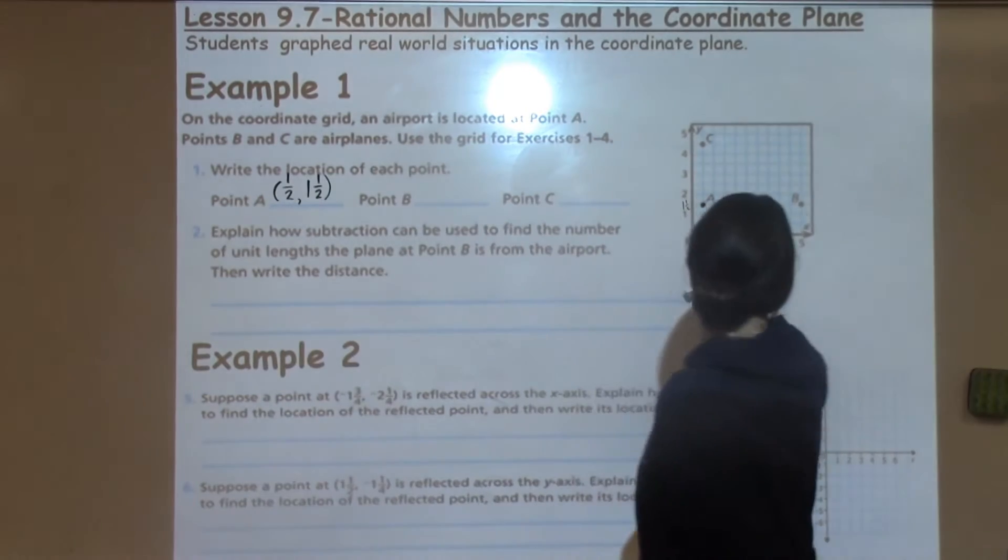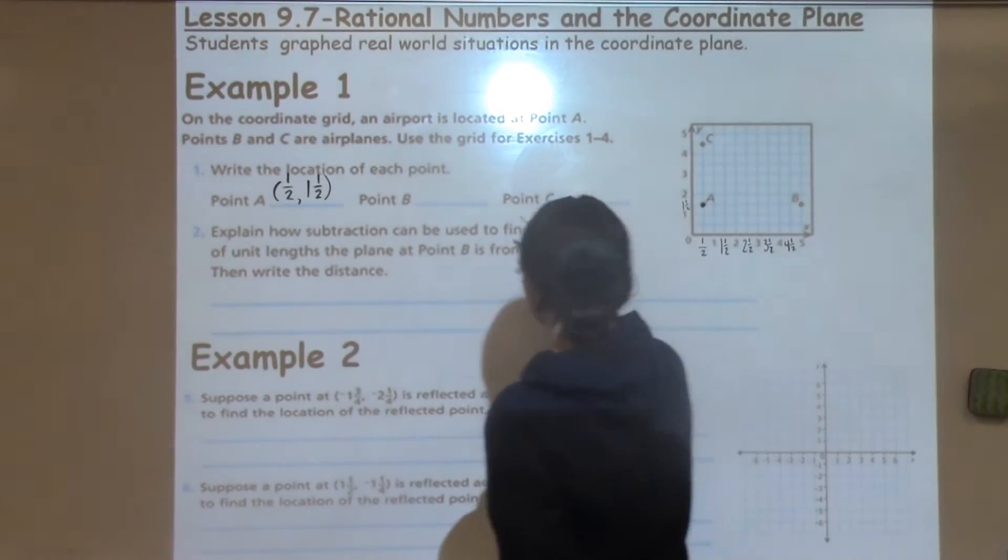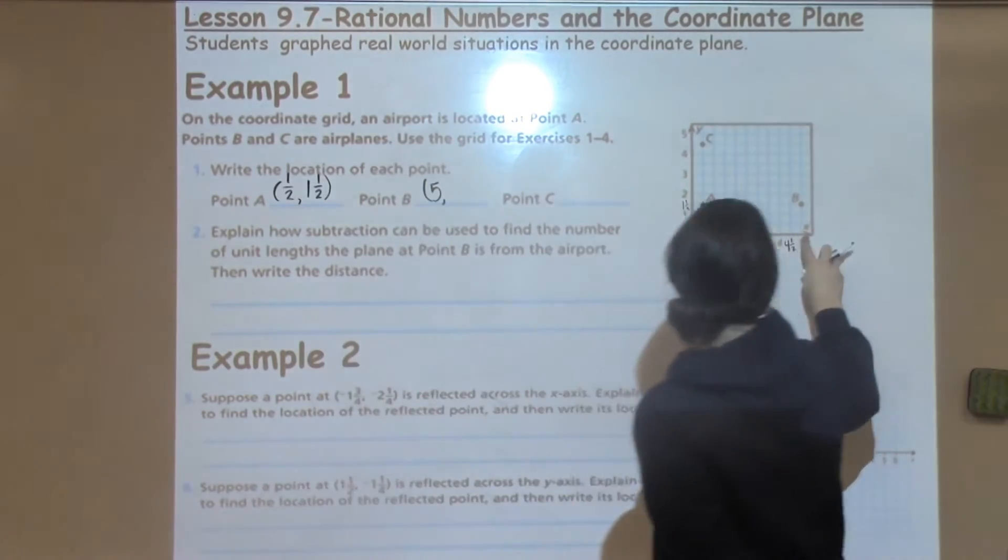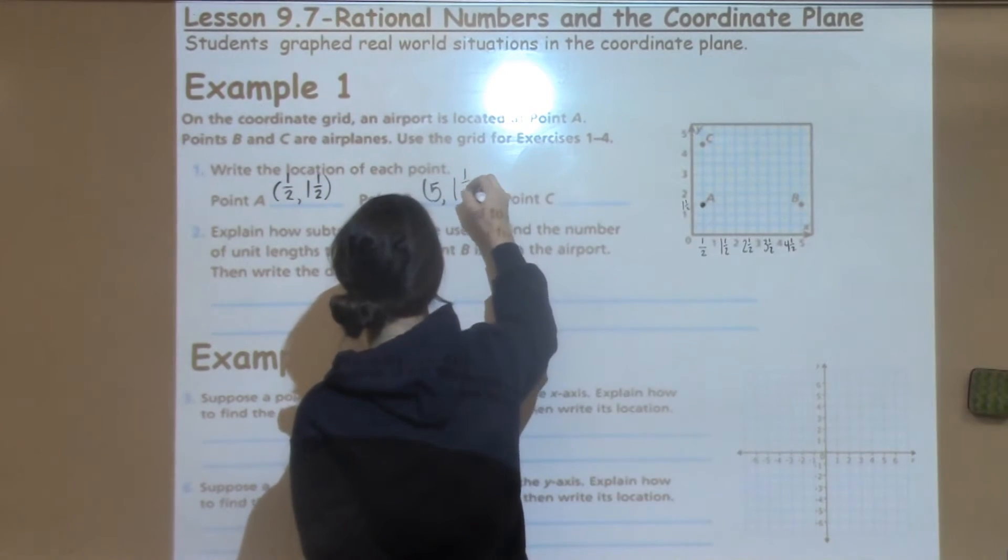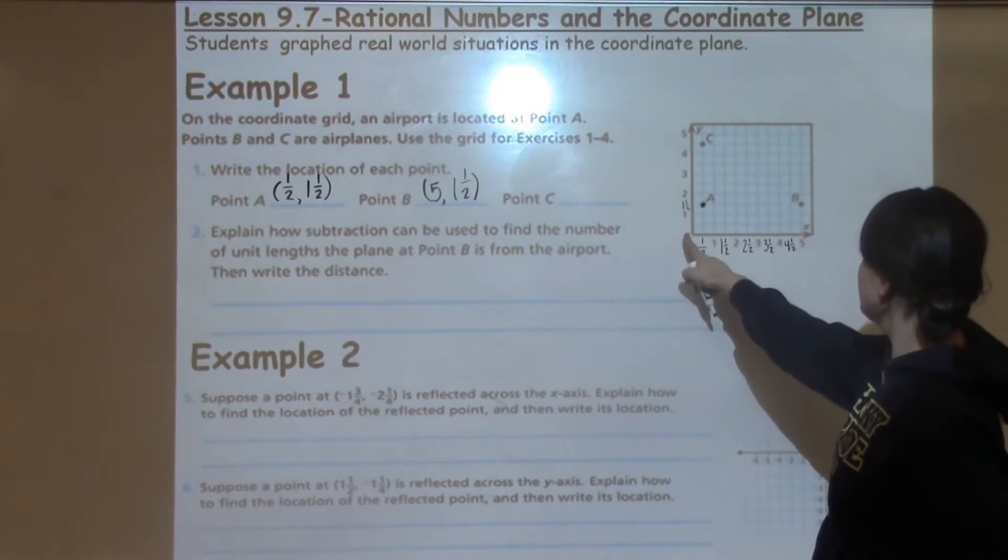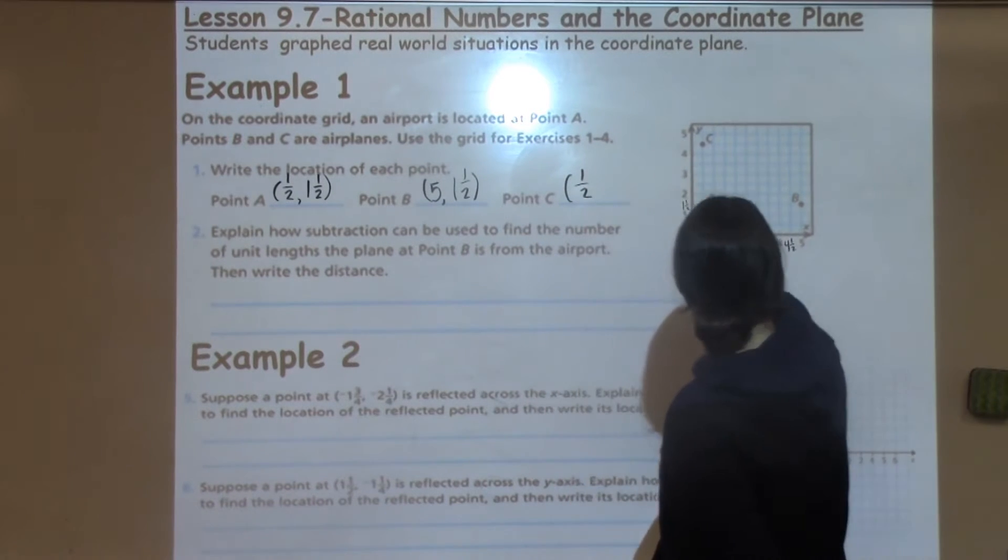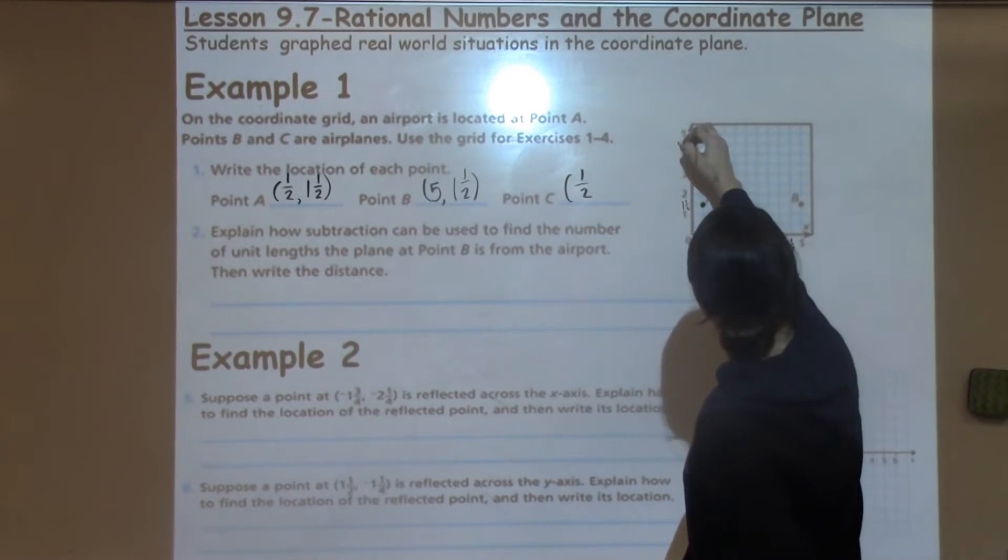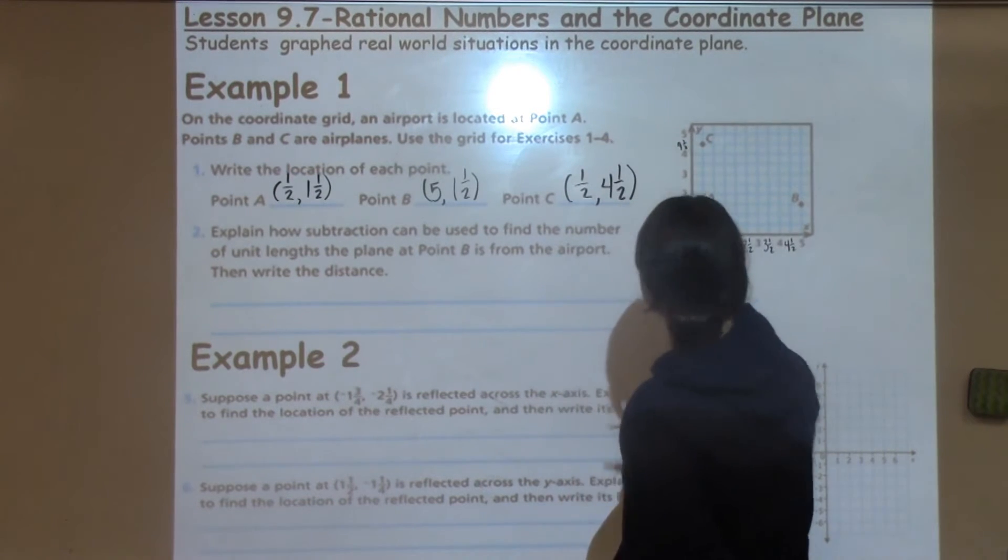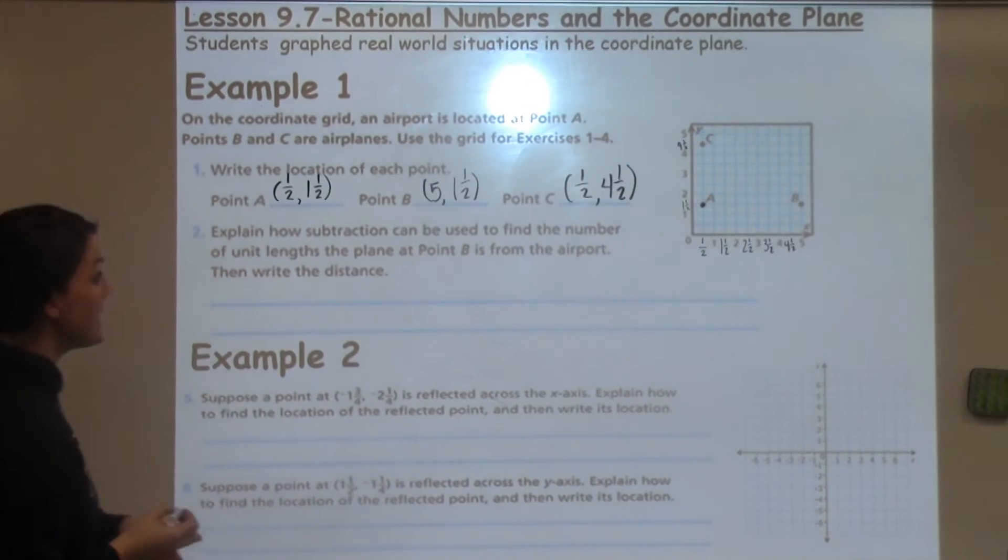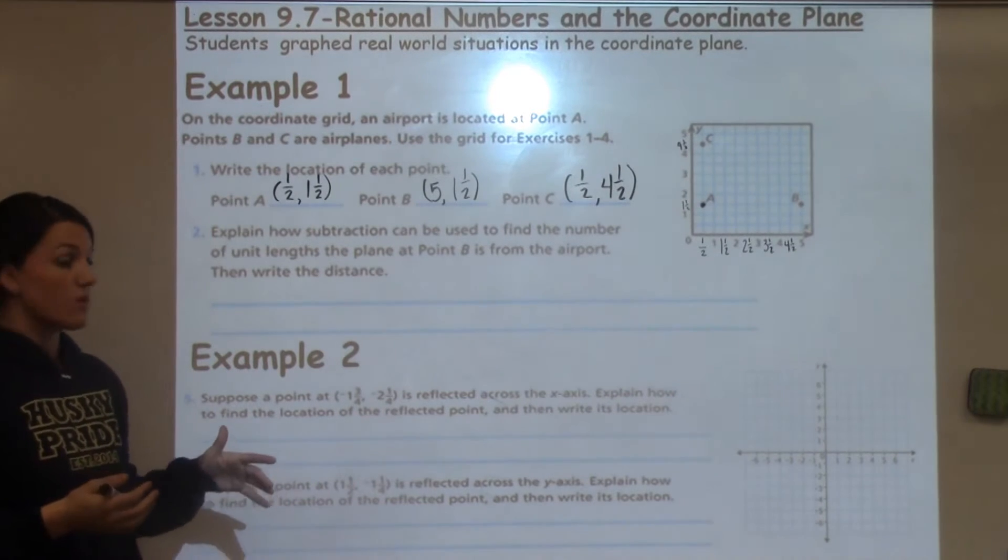Point B, I'm going to go over, it is actually on a whole number line, it is on line 5, and then I go up, and it is also on 1 and 1 half, just like point A. Now I'm looking at point C, I go over, it is on line half, and it goes all the way up, it's between 4 and 5, which I know because I'm counting by halves would be 4 and 1 half. So now that I have the points of my different letters A, B, and C, I can analyze it further and answer different questions about it.